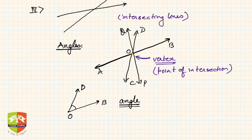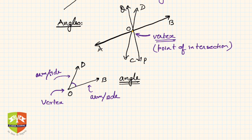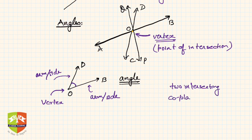Let us call the point of intersection O. The geometric element formed here is called an angle. An angle is formed by two intersecting lines. The vertex of the angle is point O. There are two arms or sides of the angle — this is one arm and this is another arm. We put a curve between the two arms to represent the angle. Two intersecting coplanar lines form an angle.